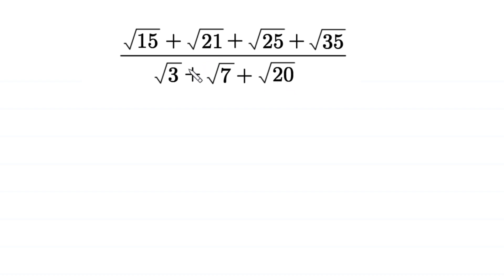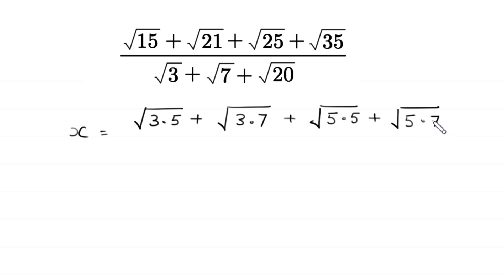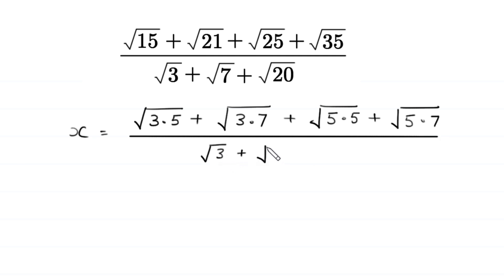First of all, we suppose that this expression is equal to x. So x equals this expression where square root of 15 is written as square root of 3 times 5, square root of 21 as square root of 3 times 7, square root of 25 as square root of 5 times 5, and square root of 35 as square root of 5 times 7, divided by square root of 3 plus square root of 7 plus square root of 20 written as square root of 4 times 5.